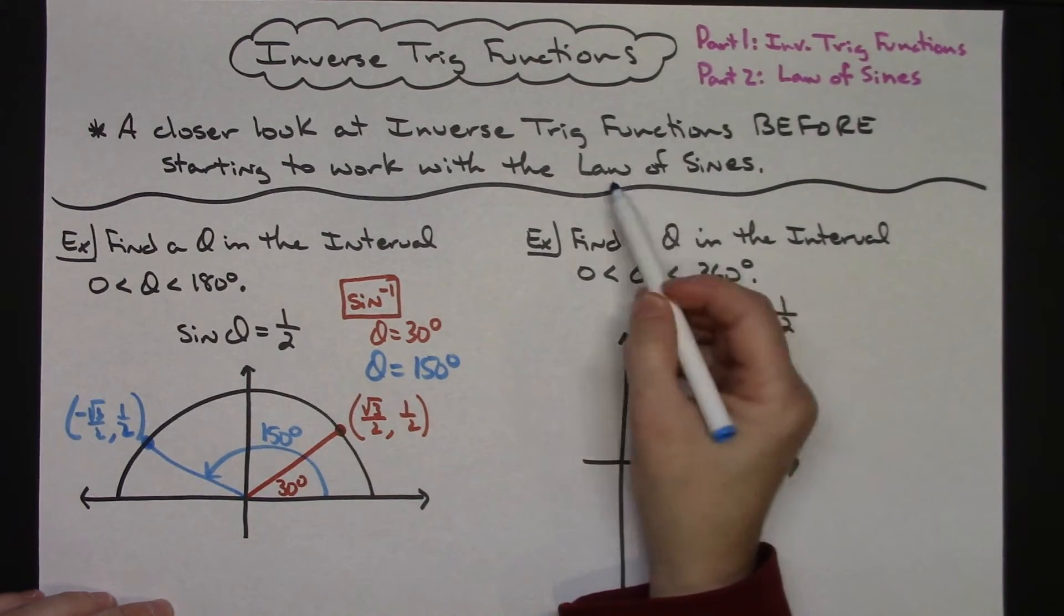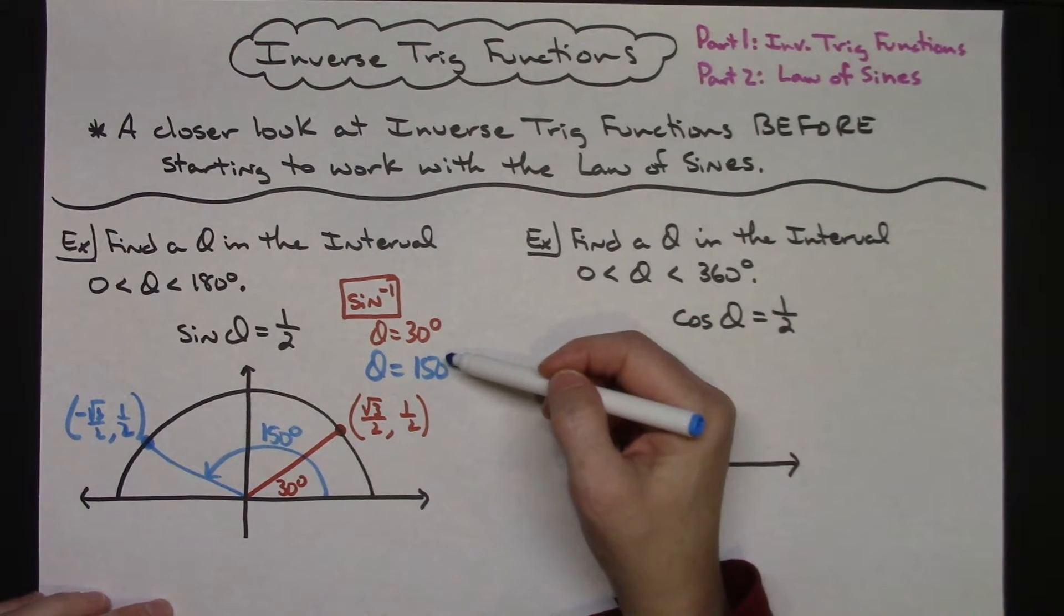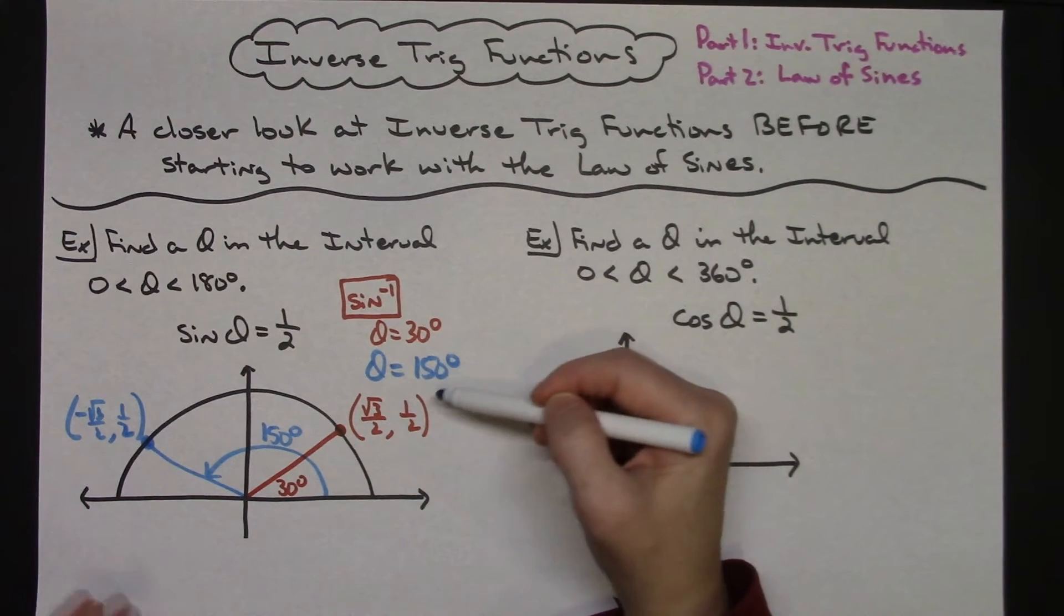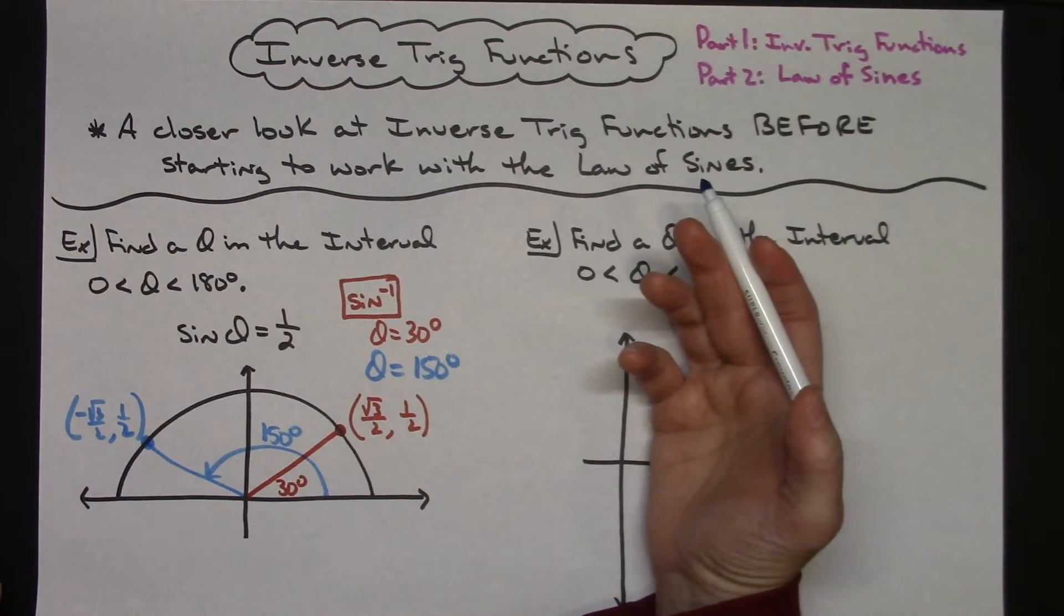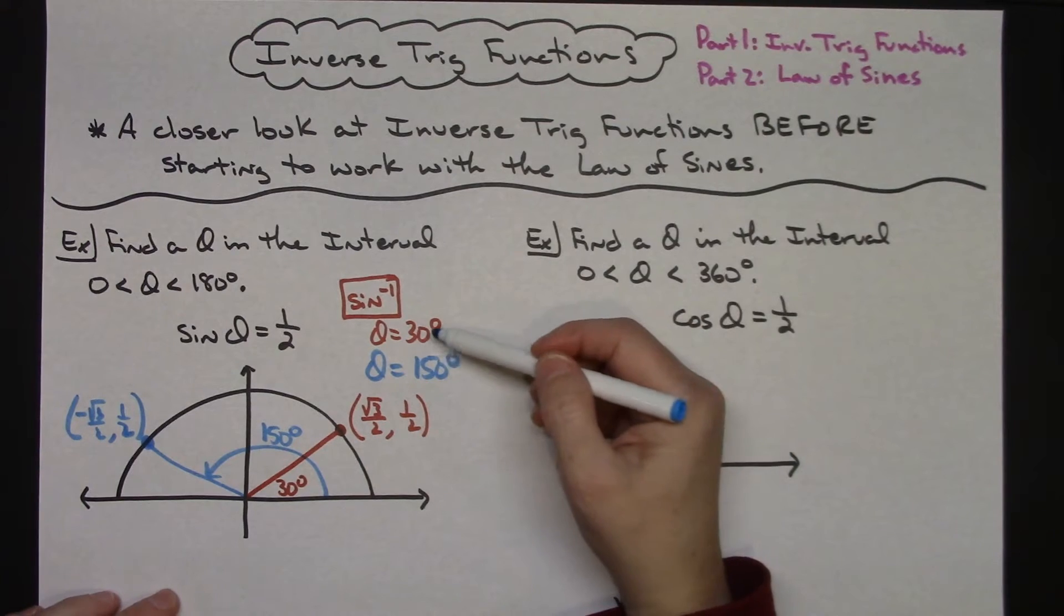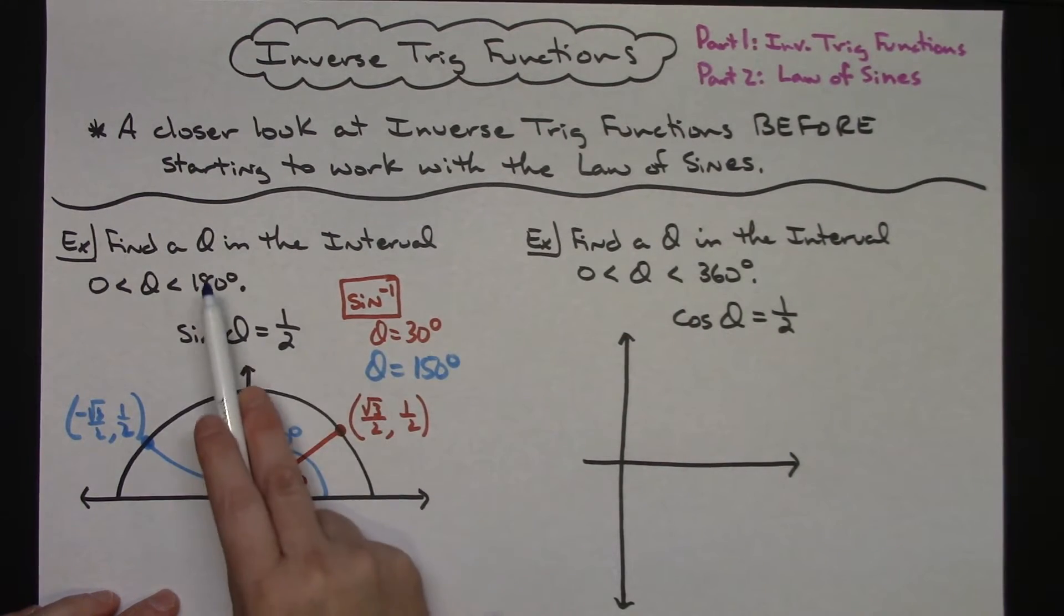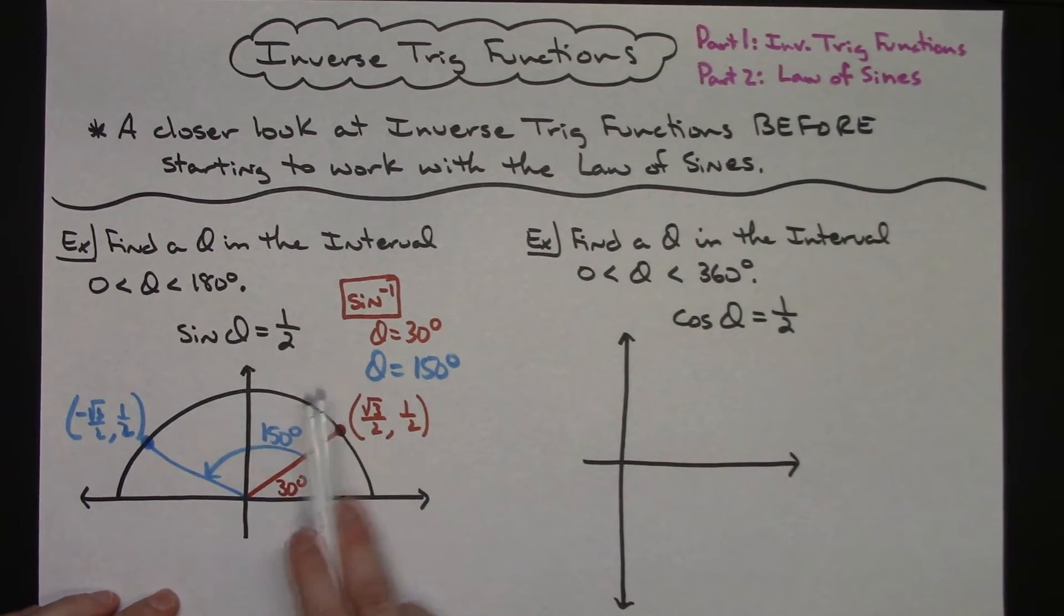Once we start working with the law of sines, you may have to deal with both solutions, or maybe throw one out because when you add up your triangle angles you're over 180 degrees. Regardless, when you need to find the inverse of one of your trig functions, you've got to think about that unit circle and whether there's a second possibility.